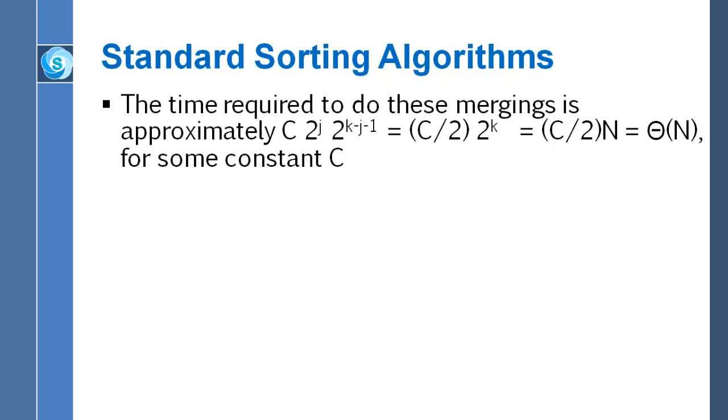So in other words, a constant times, or at least approximately a constant times two to the j is how much time it requires to do each of those mergings. And the number of such mergings is two to the k minus j minus one. You put that together and you quickly see that j is canceling and you wind up with a constant, which happens to be c over two, multiplied by two to the k. Since two to the k is just another name for n, this is a constant times n.